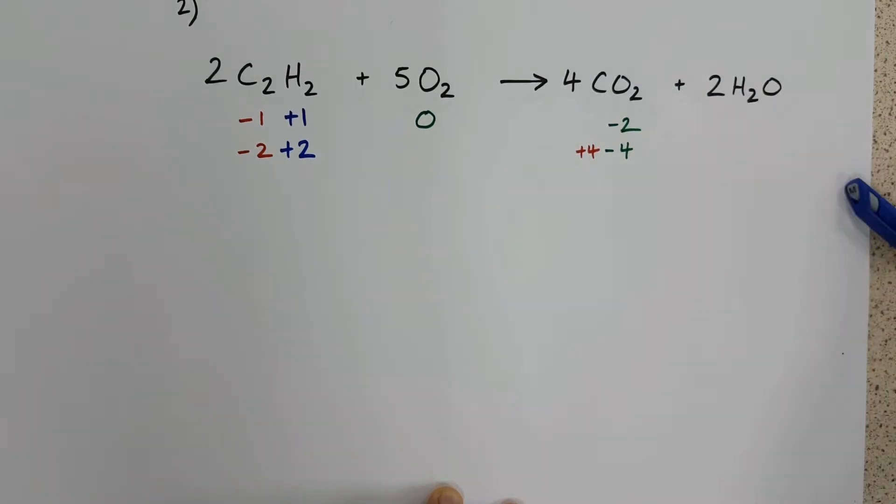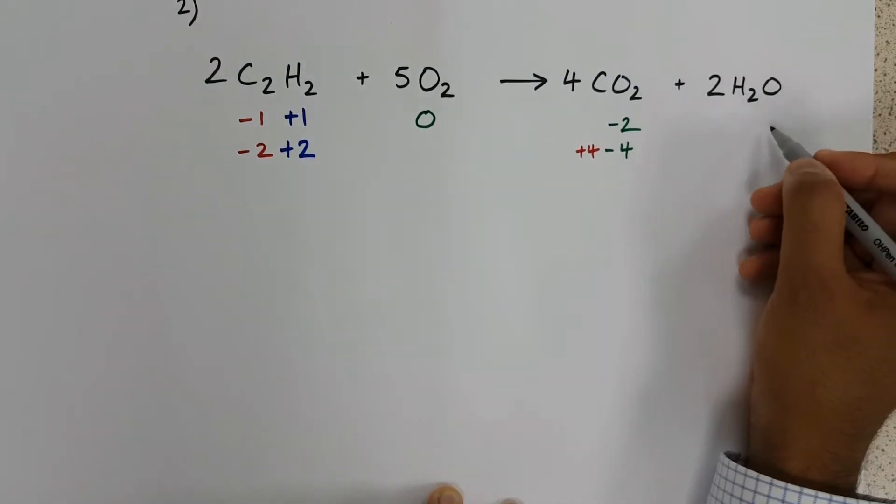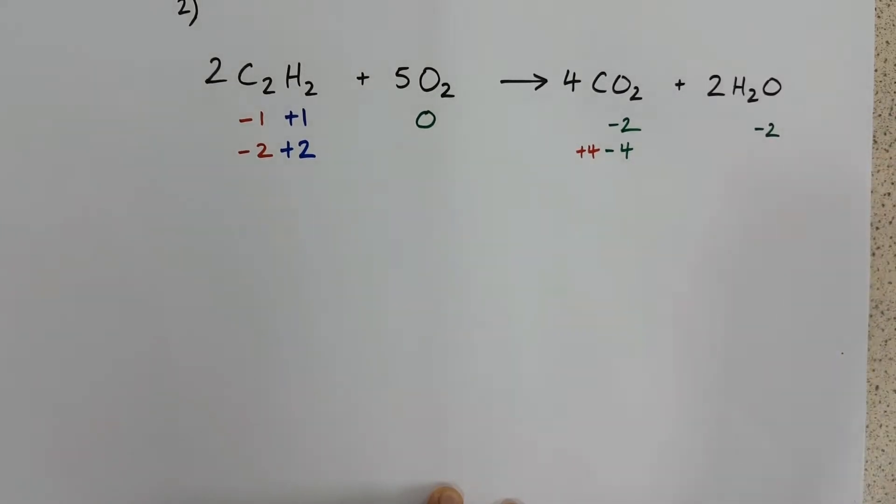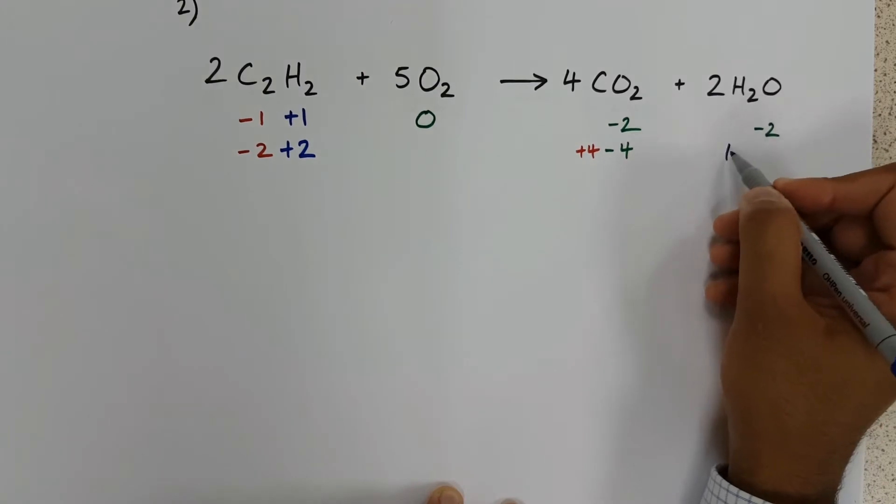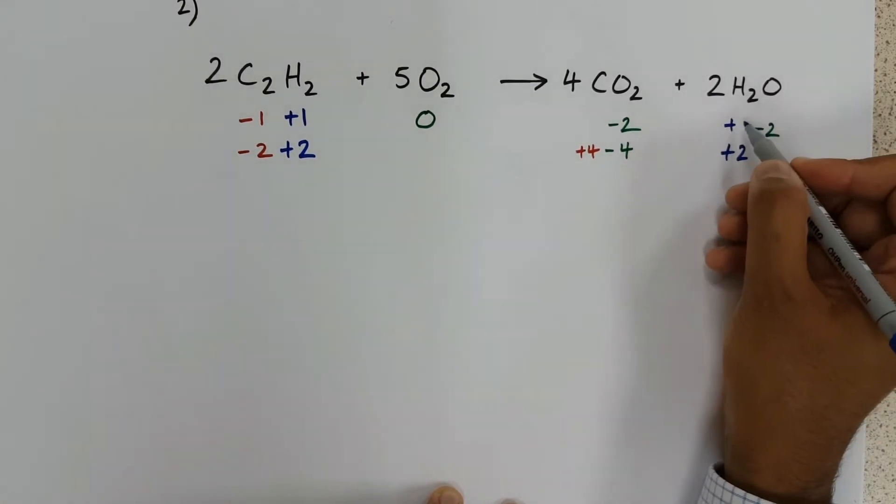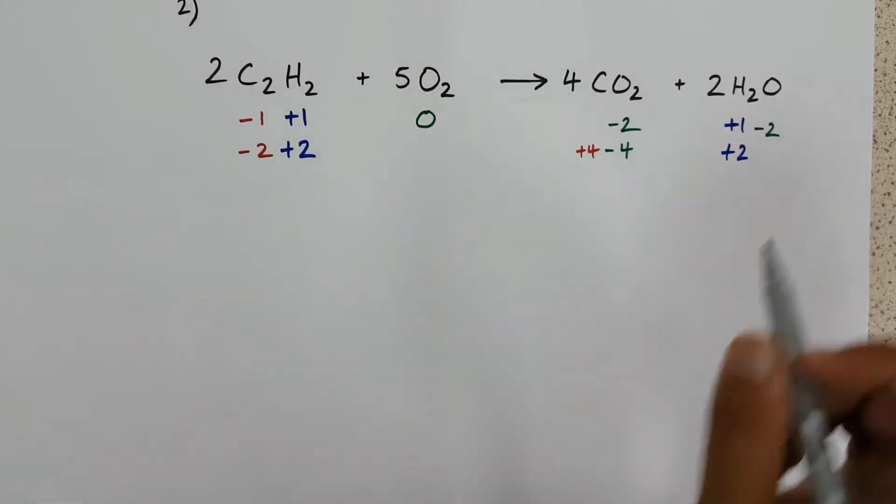Coming across here, we still have another oxygen to take care of. Oxidation state is minus two. And finally, with hydrogen, there are two of them, so this side must be plus two. And as expected, hydrogen is plus one.